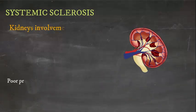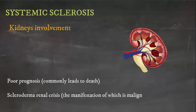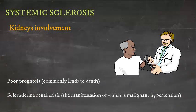Kidney involvement in scleroderma is associated with poor prognosis and commonly leads to death. The important clinical complication involving the kidney is the scleroderma renal crisis, the manifestation of which is malignant hypertension.